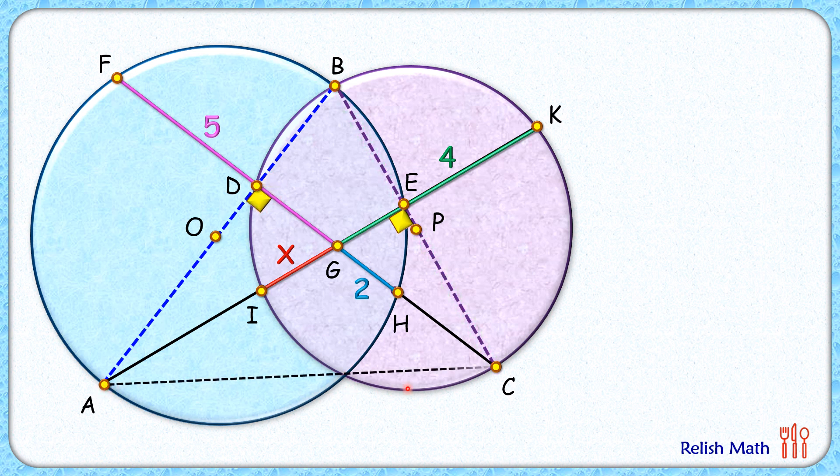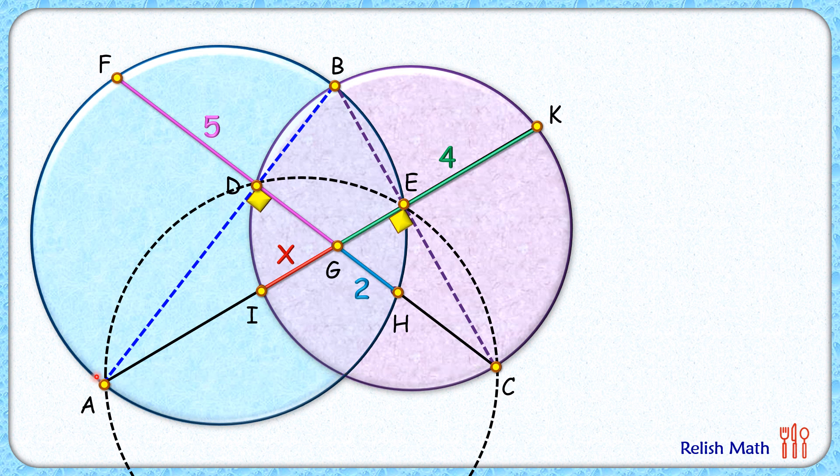Now let's join AC here. AC is a line segment which is sustaining angle 90 degrees at point E and 90 degrees at point D. Thus by theorem, these points D, E, C, A are concyclic.